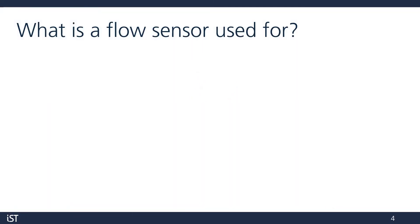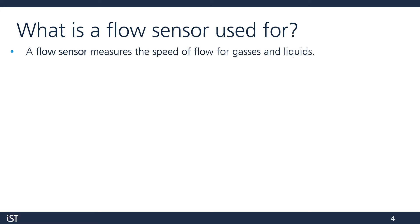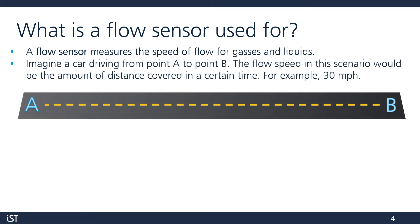What do we use flow sensors for? A flow sensor is generally used to measure gas or liquid flow rate. For example, if we have a car driving from point A to point B, the flow speed would be the distance the car drives in a certain amount of time — for example, 30 miles per hour. We'll use different units when measuring gas and liquid flow, but it's generally the same idea.